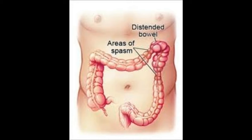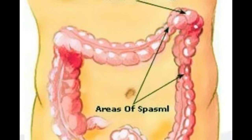The colon forms a roughly squared-off horseshoe shape in the abdomen. On the right side is the ascending colon, which travels up the abdomen to the hepatic flexure, or bend, that connects this part of the colon to the transverse colon, which stretches across the abdomen to meet the splenic flexure. From here, the descending colon travels down the left side of the body. This condition is also referred to as the left colic flexure but gets its common name from its proximity to the spleen.